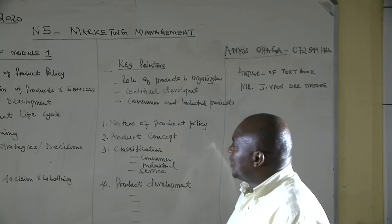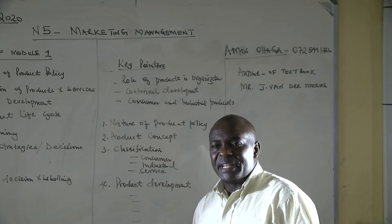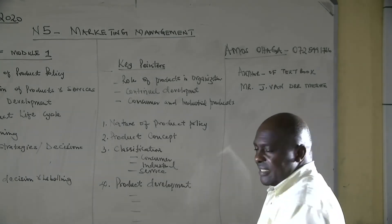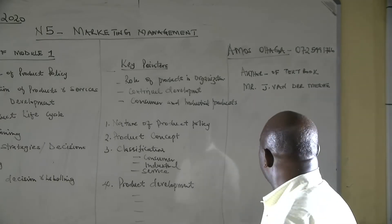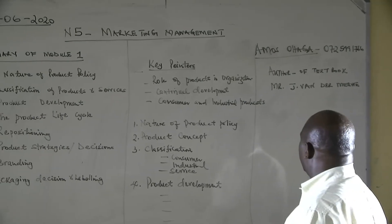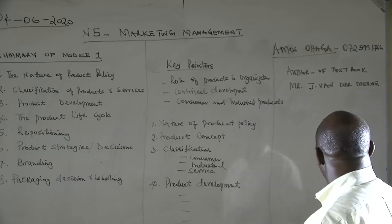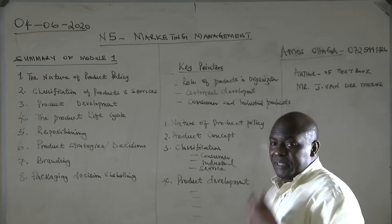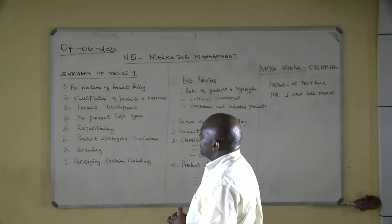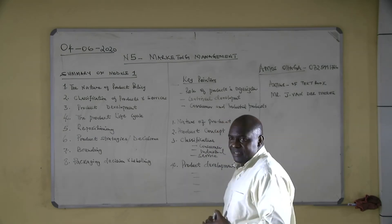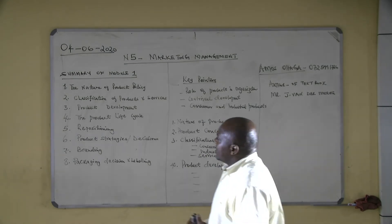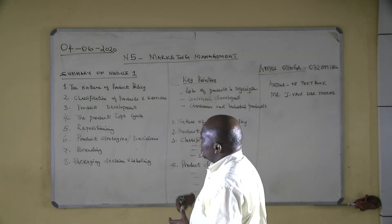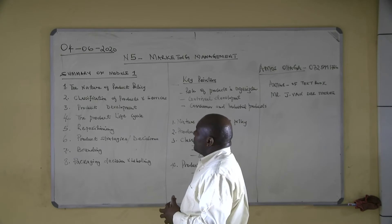Good afternoon. My name is Amos O'Haga. I have written my name on the board and my cell number is there for contact purposes. The textbook we are going to refer to is authored by J. Van Igueri. We will tackle N5 Marketing Management and the summary on the board is module 1. We shall only tackle three parts of this particular module.